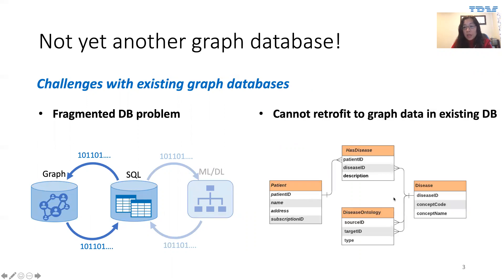Second, although graph databases only flourished in recent years, graph data — which essentially captures relationships between real-world objects — have been around since the beginning of data management. So how do you query existing graph data stored in a relational database? Today, you pretty much have to export your relational data into one of those graph databases. Of course, this data transfer is very expensive, and it is a lot of work to make sure the two copies of data are consistent.